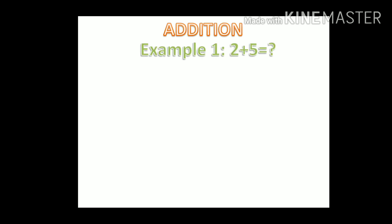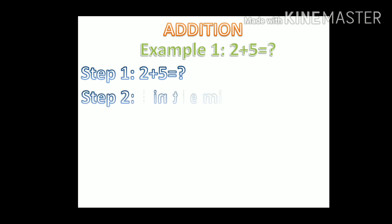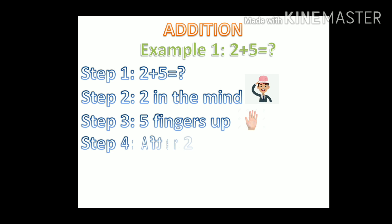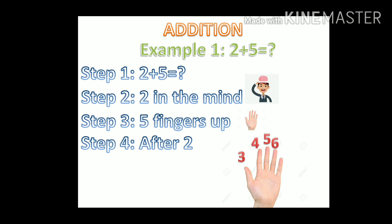2 plus 5 equals? 2 in the mind. 5 fingers up. After 2: 3, 4, 5, 6, 7. The answer is 7. 2 plus 5 equals 7.